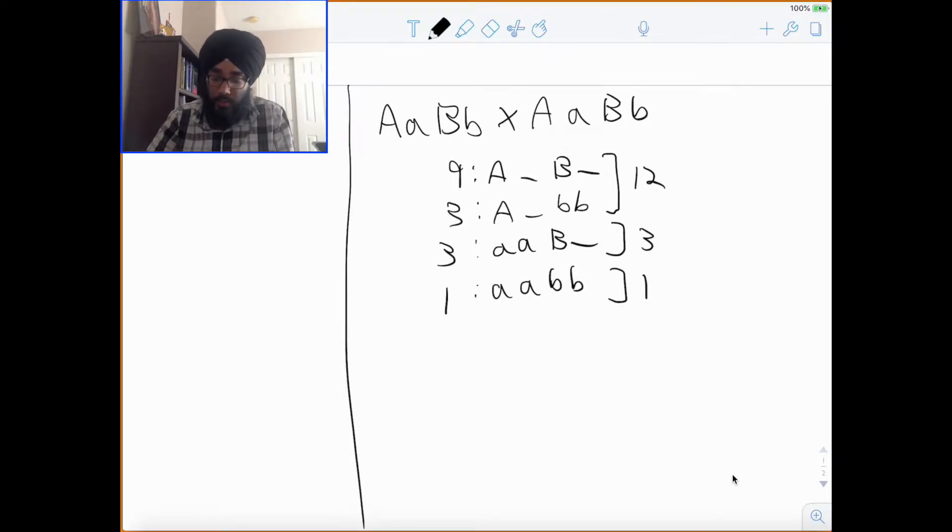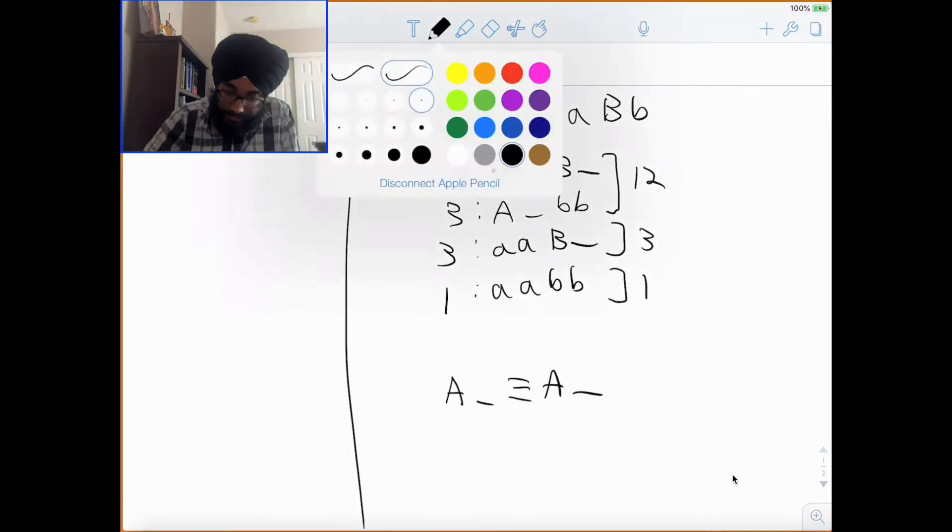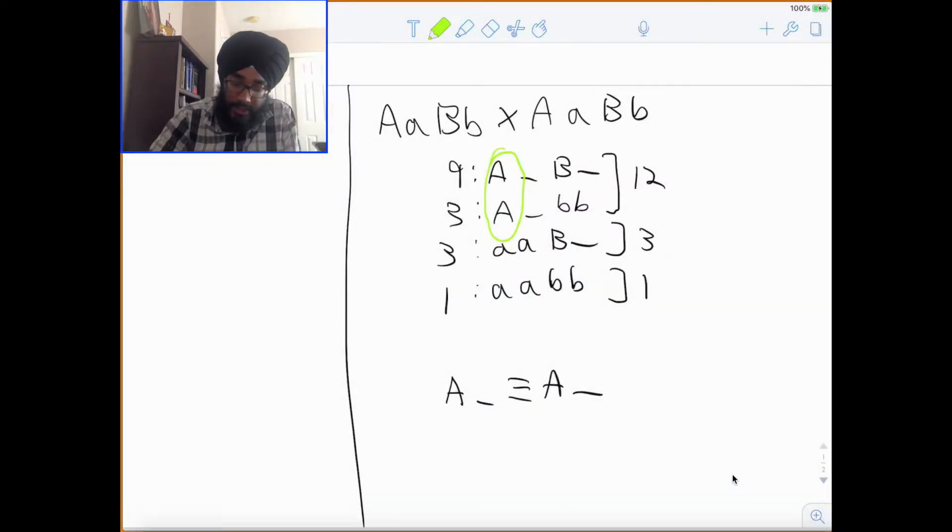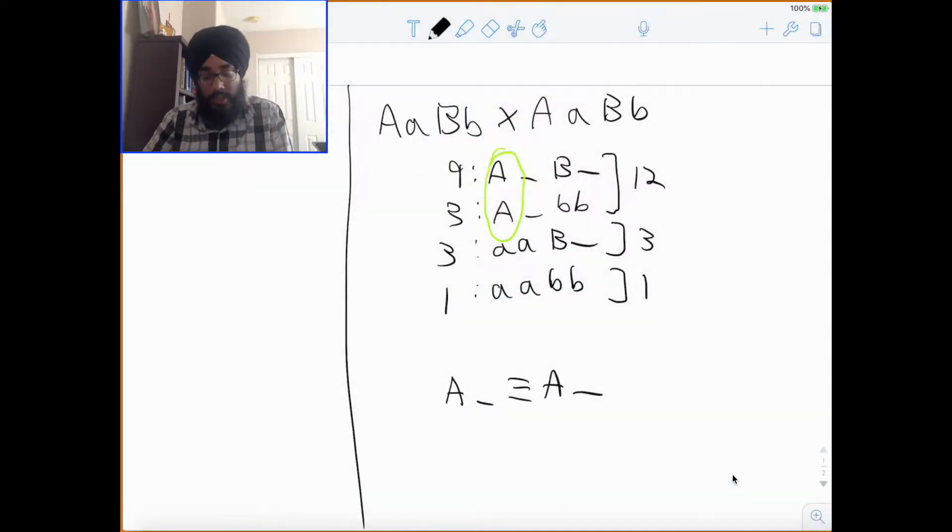For example, if I have a 12-3-1, I can see my gene A is equaling gene A, right? See that right here. If two dominant genes like this are equaling, this is a clear indication of dominant epistasis. And so, you will be giving it this type of pattern right here.